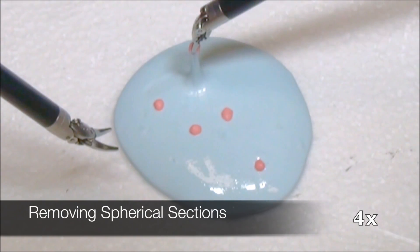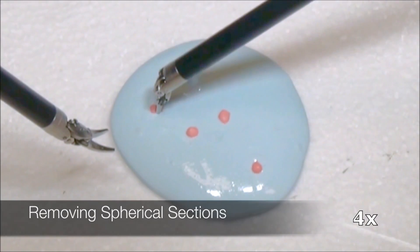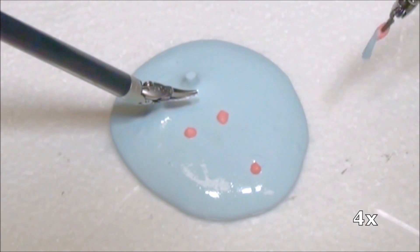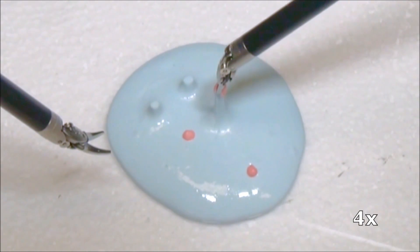The next subtask is spherical debridement, removing a set of randomly placed spherical sections of cancerous tissue. We use plastic putty as a proxy for healthy tissue. Embedded in the healthy tissue are multiple targets made of a viscoelastic material shown in pink.